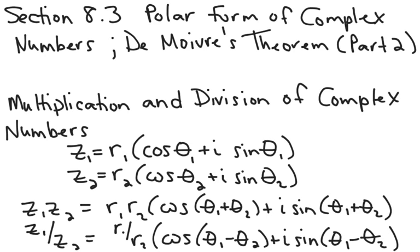This is Section 8.3, Part 2. We're still talking about the polar form of complex numbers. We're going to talk about multiplication and division of complex numbers. If you have two complex numbers written in polar form, then multiplying and dividing them actually becomes very easy, whereas multiplying and dividing complex numbers in rectangular form is more arduous.